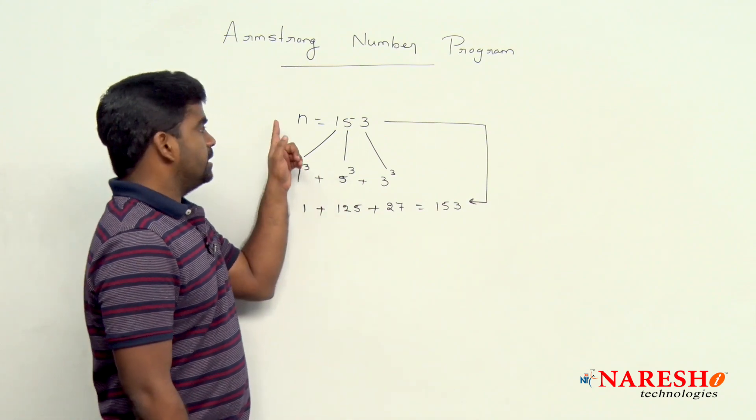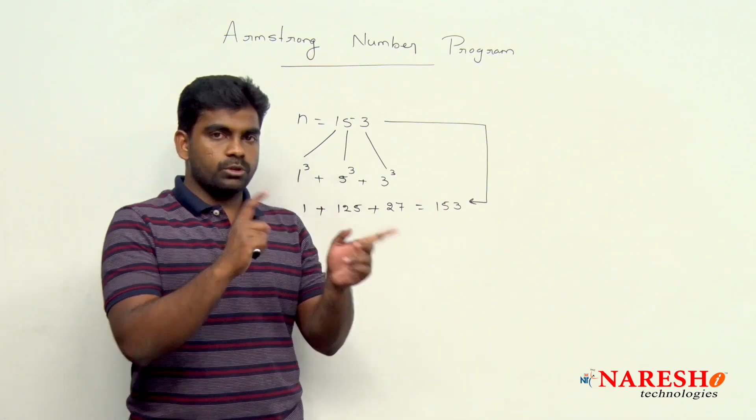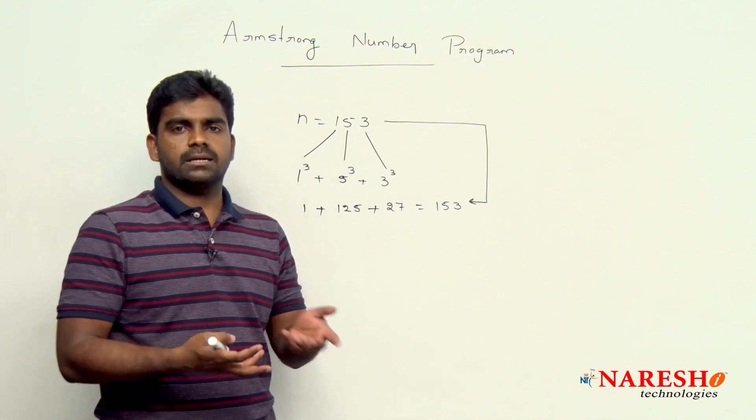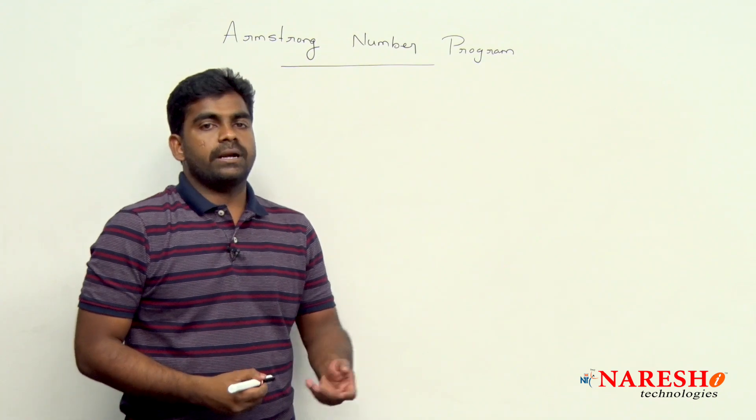And finally, check that n value and the sum value you found. If both are same, directly you can say that it is an Armstrong number. Let's see how to write the code.